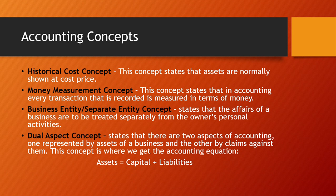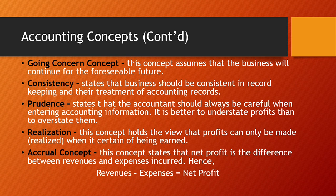The dual aspect concept states that there are two aspects of accounting — one represented by the assets of a business and the other by claims against them. This is where we get the accounting equation: assets equal capital plus liabilities. The going concern concept assumes that the business will continue for a long time, and financial records are prepared on that basis. The consistency concept states that the business should be consistent in its record-keeping and treatment of accounting records.